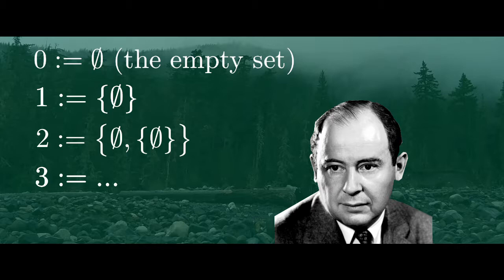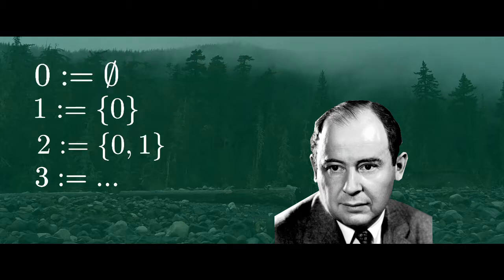Replacing the sets with their defined numbers, we can see that we have 0 as the empty set, 1 as the set that contains 0, 2 as the set that contains 0 and 1, 3 as the set that contains 0, 1 and 2, and so on.